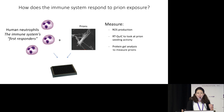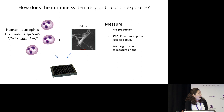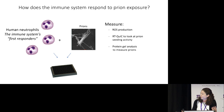Thinking about what a potent disinfectant these hypochlorous acid solutions were, and considering that they are produced naturally in your body in response to infection, I began to consider: could hypochlorous acid production by the immune system possibly manage a prion infection? And so first — does the immune system actually even respond to a prion exposure?